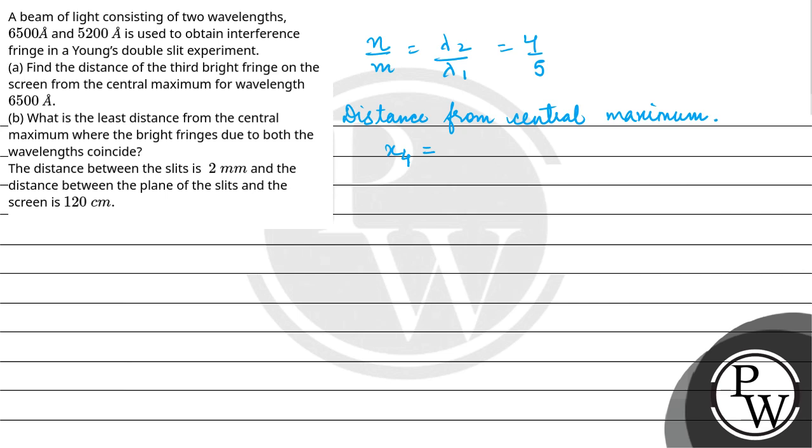You can find the 4th fringe's distance from maxima for lambda 1 or the 5th fringe's distance from maxima for lambda 2. So x4 will be 4 × lambda 1...